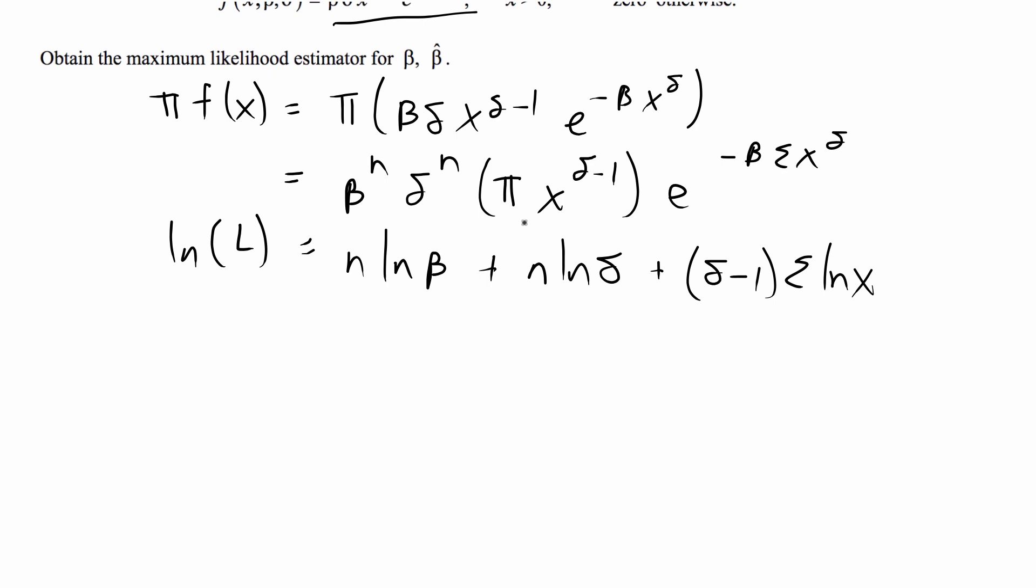And then if you take the natural log of e, that's just going to cancel out, so we're going to have minus beta sum of x to the delta.